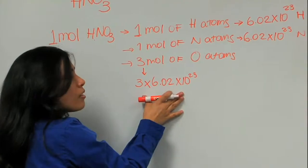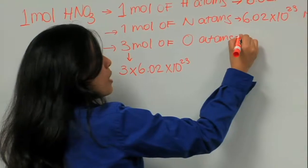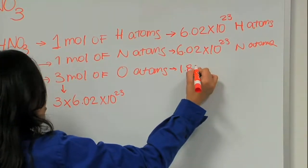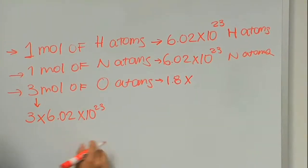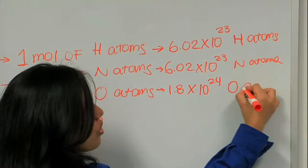And this, if you do it in your calculator and you put it in scientific notation, it would be 1.8 times 10 to the 24 oxygen atoms.